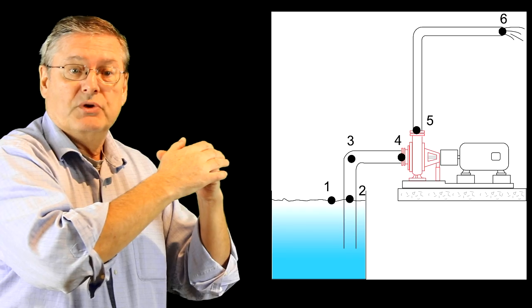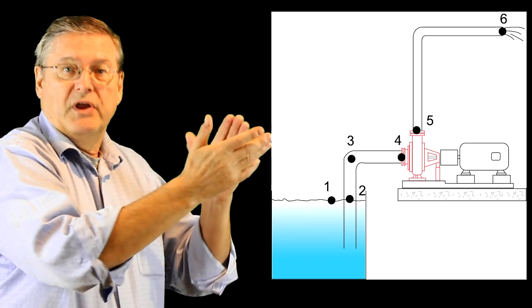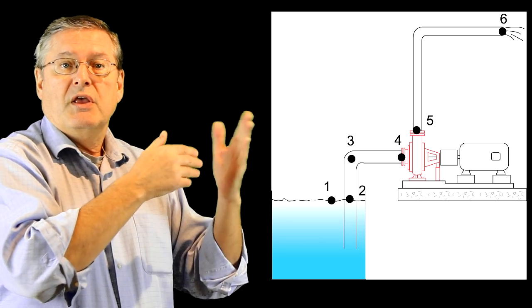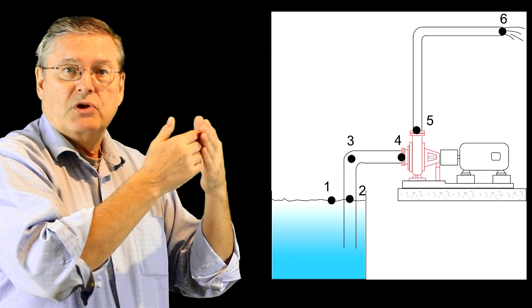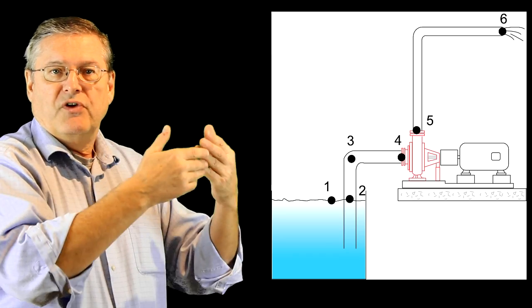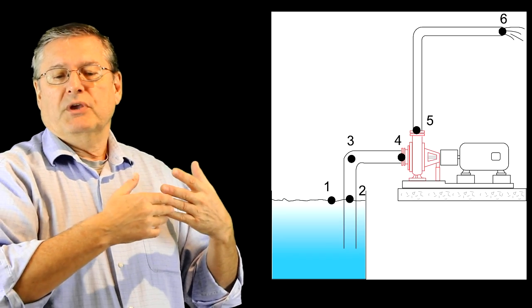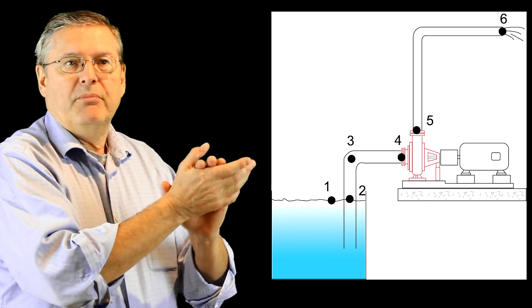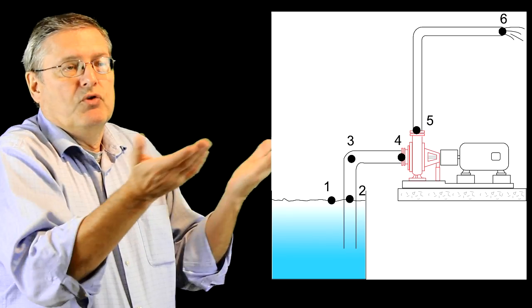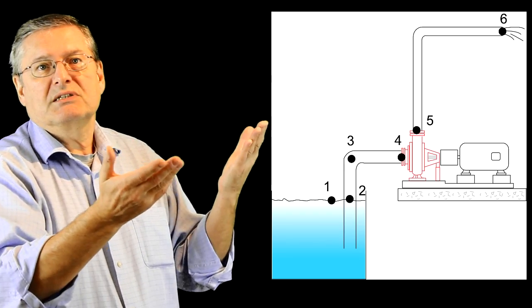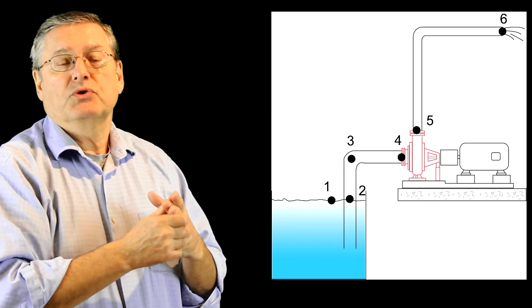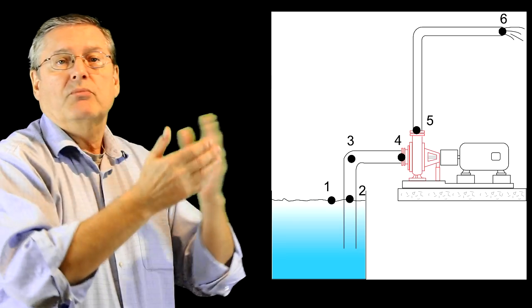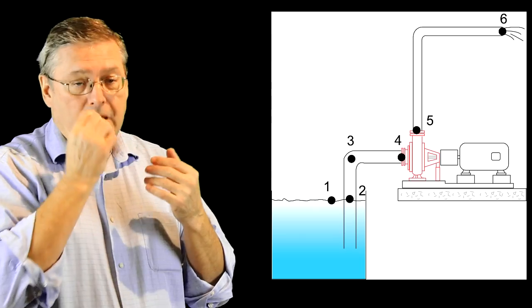As we go up in height pressure drops, and we'll probably be below atmospheric pressure at that point. Point four is the pump entrance — same pressure level as point three minus a little friction. Point five is the pressure increase from the pump. Point six is the pipe outlet going to atmosphere, so at six we have zero pressure. Between five and six we've gone up, lost pressure due to friction, and reached zero at atmosphere.